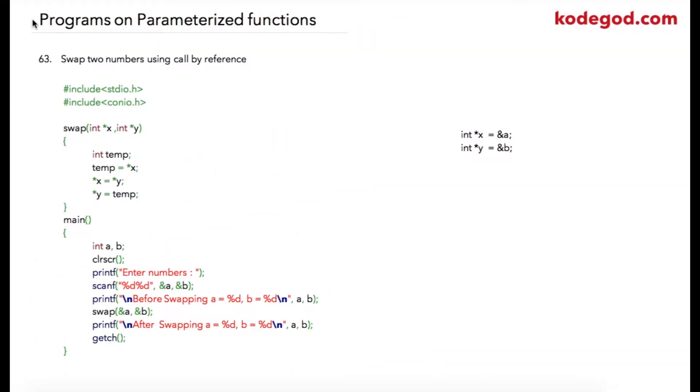We are continuing our studies on parameterized functions and this is one more program that we are going to check. In this we are going to swap two numbers, but in this program we are going to use call by reference method instead of call by value, so obviously we are going to use pointers.